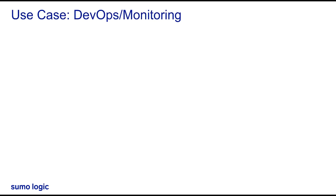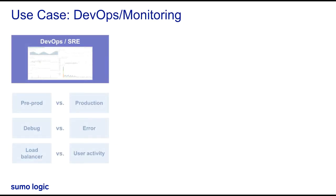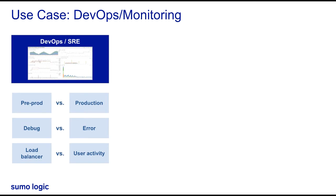If we zoom in on DevOps and site reliability engineering, or SRE, we have two pre-production teams: Dev and QA. They may be using those logs on an intermittent basis to troubleshoot and prepare for application releases. They'll use the data to debug certain issues, but they won't necessarily access it on a super-frequent basis.